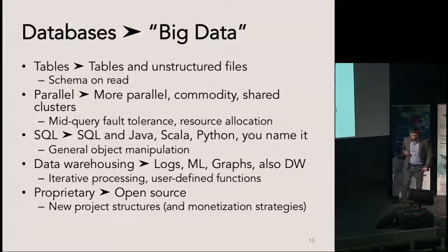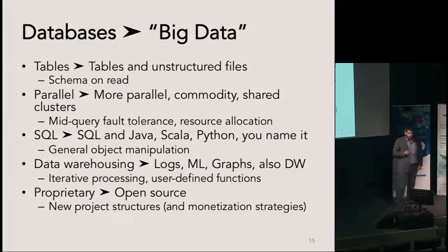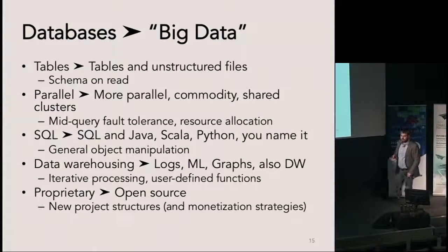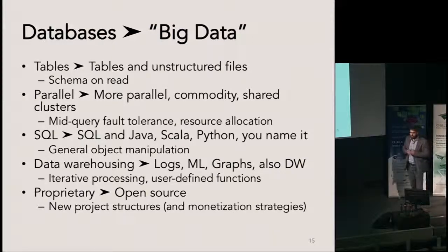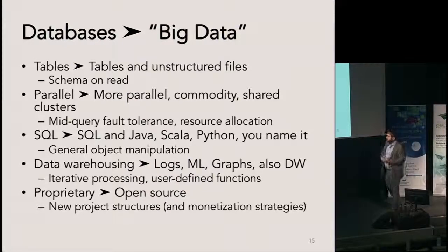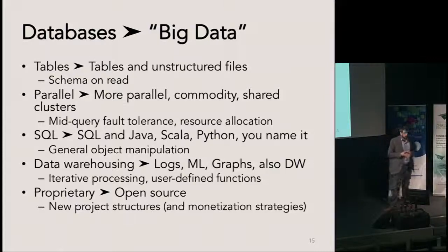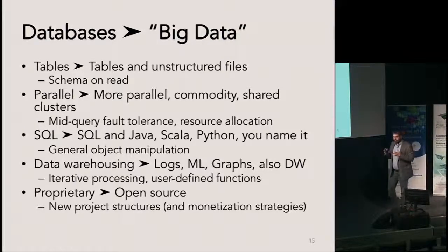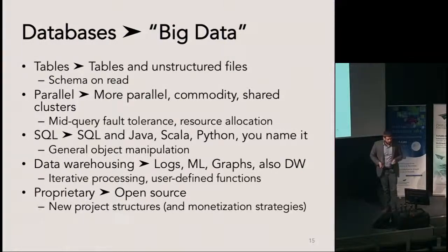What is different between what people call big data and traditional parallel databases? The first thing is that instead of having data mostly in tables, we also have a lot of unstructured data in the form of files. The solution people came up with is schema on read — you don't supply the metadata about your data upfront, but you do it when you actually read it. It's a more adaptive, on-demand approach.